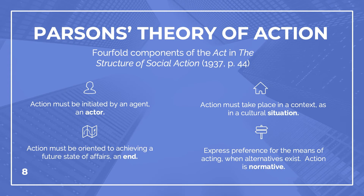Here we see the four components outlined in the 1937 book, The Structure of Social Action. Acts must have: one, an actor; two, an end goal; three, take place in a cultural situation; and four, express preference when preferences are possible — that is, they are normative. At first sight, this looks very similar to Weber's definition — and that's because it is. But recall the agency-structure debate: Parsons is interested in explaining the actions of agents in their social roles, not just the motivations of an individual person.